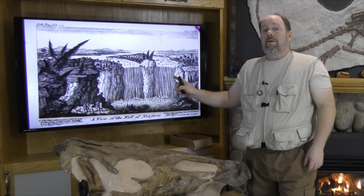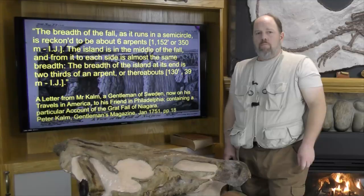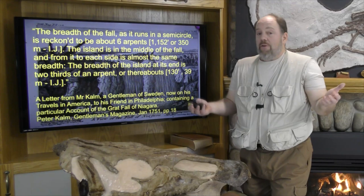Yes, it's radically different than modern times, but conventional thinking has skewed your perceptions and assumptions. Kalm's drawing even matches his very detailed written description, which radically differs from the modern form. For example: 'The breadth of the fall, as it runs in a semicircle, is reckoned to be about six arpents. The island is in the middle of the fall, and from it to each side is almost the same breadth. The breadth of the island at its end is two-thirds of an arpent, or thereabouts' — the face of the island being maybe 130 feet wide, a far cry from the very wide face of Goat Island which is currently some 1,800 feet wide.